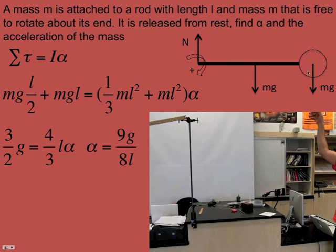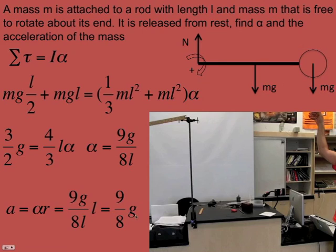For the linear acceleration at the end, a equals alpha·r with r equal to L, giving 9g/8. So if you put a coin on the end, it would come away a little bit, but not as much as with just the meter stick by itself.